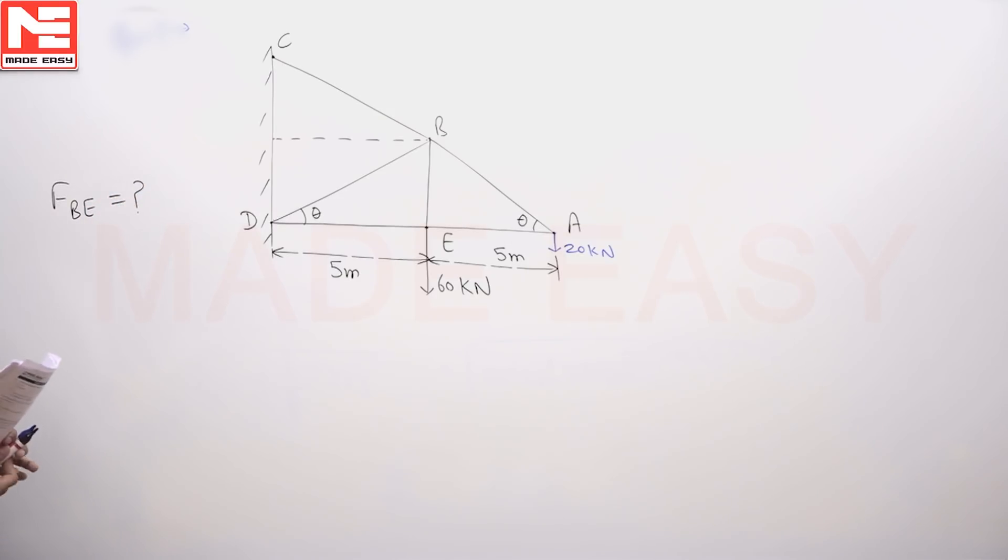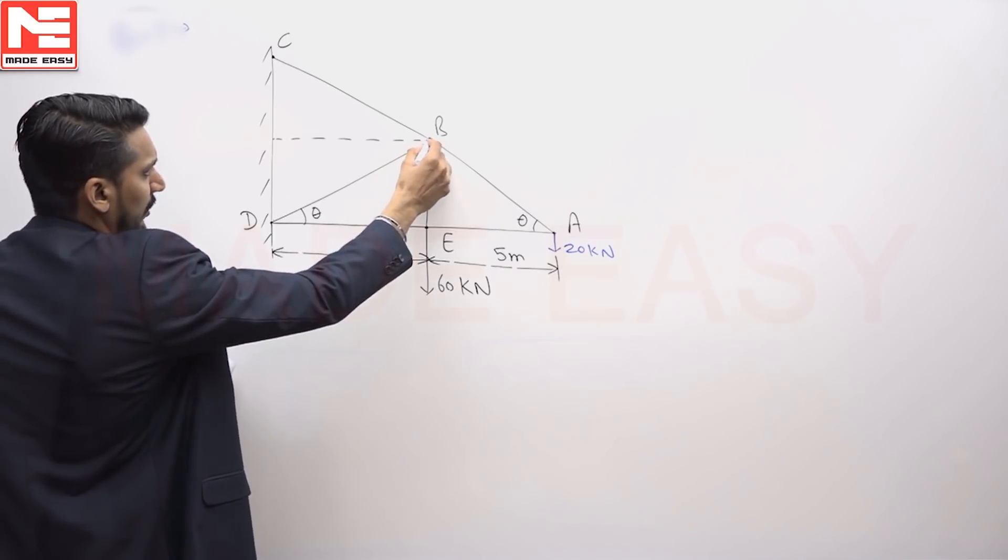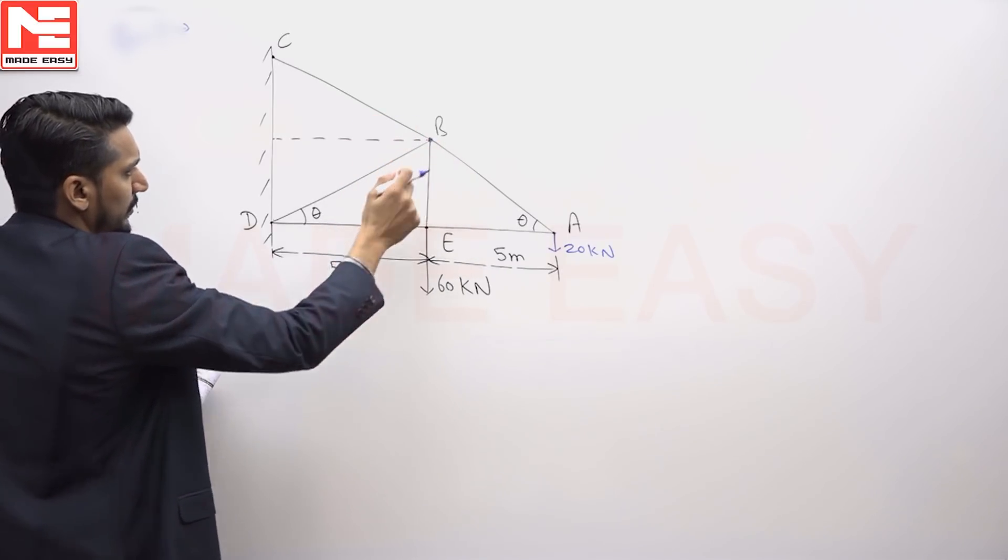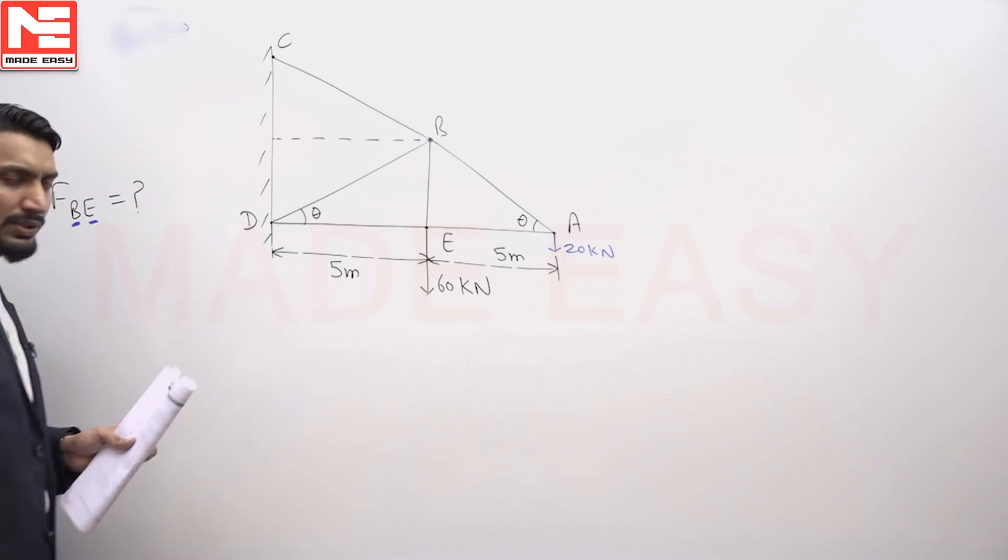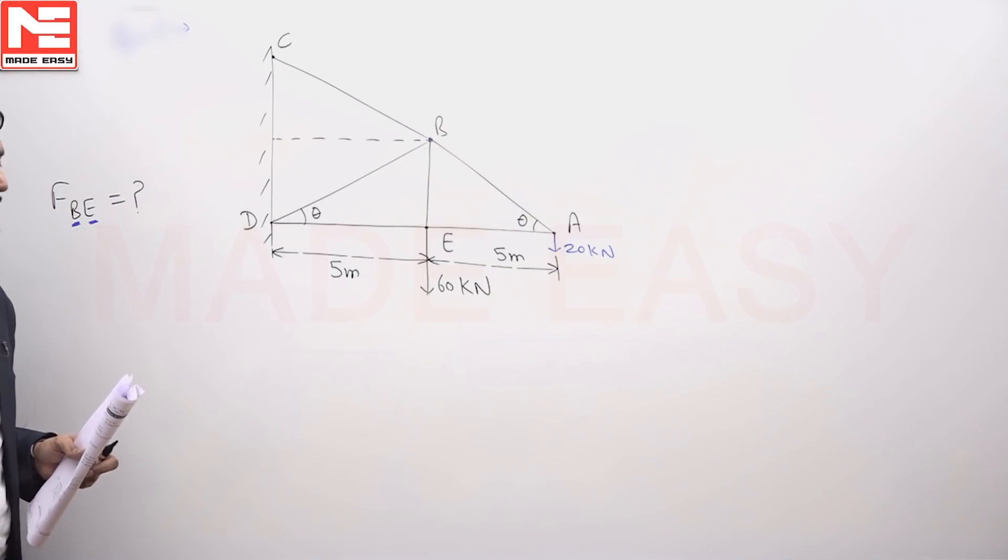I am not going to use method of section here. I know that method of joint is going to give me very easily result because to find out force in member BE either I need to consider joint B or joint E. I hope you understand at joint B all of you can see that 1, 2, 3, 4 members are meeting and forces in all the 4 members is unknown.